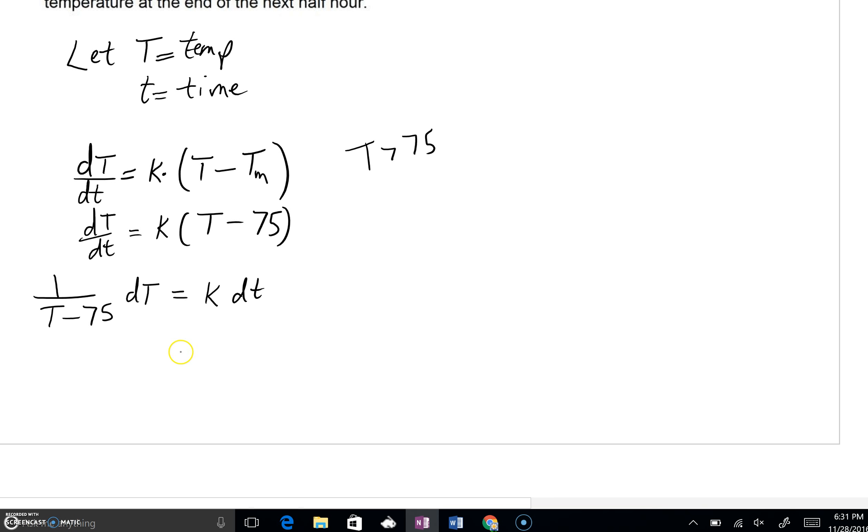In other words, we're going to take an integral, an indefinite integral at that. So as we integrate one over T minus 75, you might take a guess that this is related to the natural log. And actually it is. It's the natural log of T minus 75. Generally, we are going to put absolute value bars around that. However, if our temperature is above 75 degrees, we know that T minus 75 is always positive. So we don't need those absolute values.